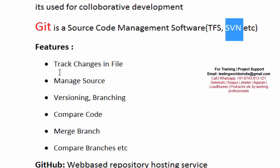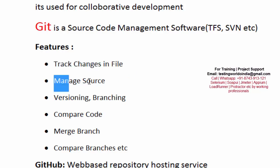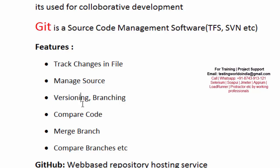The features Git provides include: tracking changes in files — if someone comes and changes a file, we can track what changes were made and who made them. It manages source code. It also supports versioning and branching, which is important. With versioning, we can control what code goes into which version of the application. With branching, we can create multiple branches of the same code.